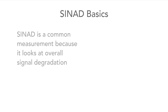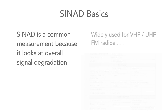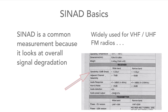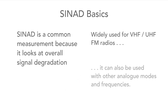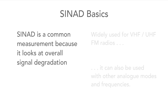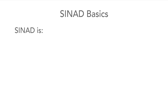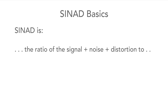SYNAD is an important measurement because it looks at a variety of signal degradation issues in one measurement. Although it's most widely used for VHF and UHF FM two-way radios, it can also be used for other analogue modes and frequencies as well. SYNAD can be defined as the ratio of the total signal level — in other words the signal together with the noise and distortion — to the noise and distortion level.